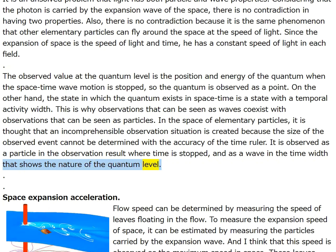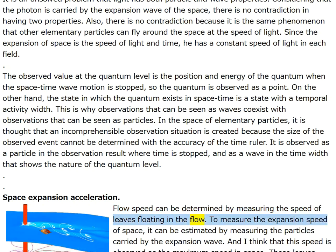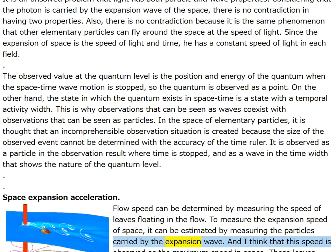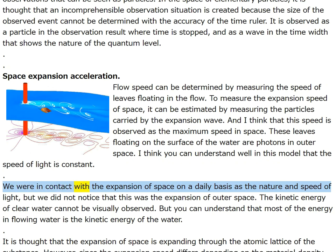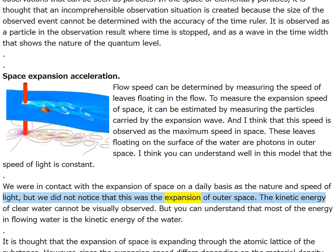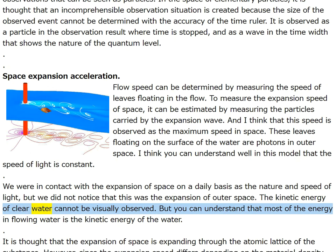Space expansion acceleration flow speed can be determined by measuring the speed of leaves floating in a flow. To measure the expansion speed of space, it can be estimated by measuring particles carried by the expansion wave — this speed is observed as the maximum speed in space. These leaves floating on the surface of the water are photons in outer space. The speed of light is constant in this model. We were in contact with the expansion of space on a daily basis as the nature and speed of light, but did not notice that this was the expansion of outer space.